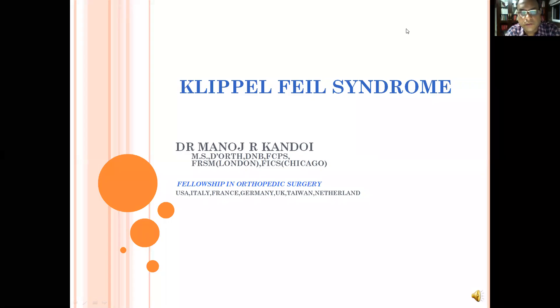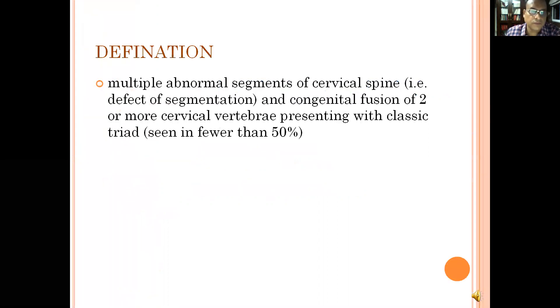Dear students, today we are going to discuss about a congenital orthopedic deformity known as Klippel-Feil syndrome. By definition, this disease is associated with multiple abnormal segments of cervical spine caused due to defect in segmentation.